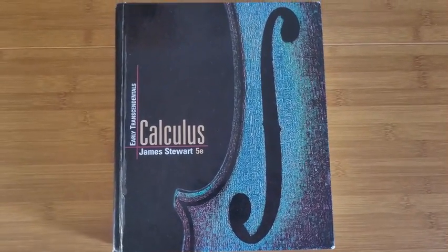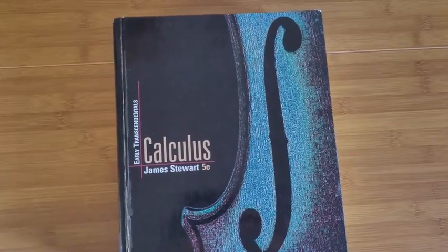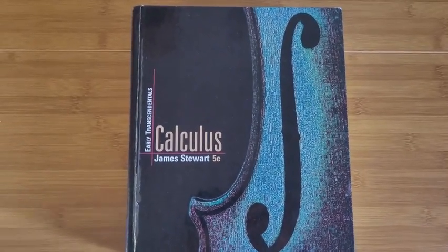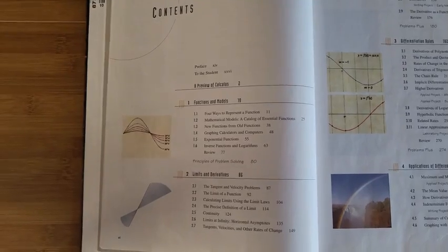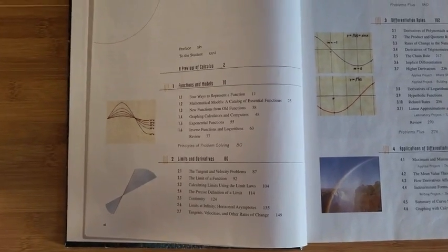Now, this book is intended for students to learn Calculus I, Calculus II, and also Calculus III at the university or college level. So looking at the table of contents here, we start off with functions and models, followed by limits and derivatives,